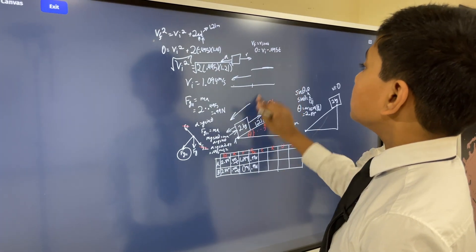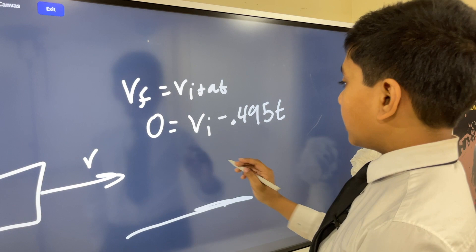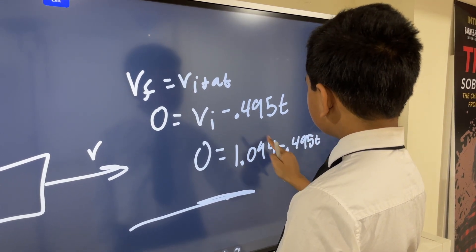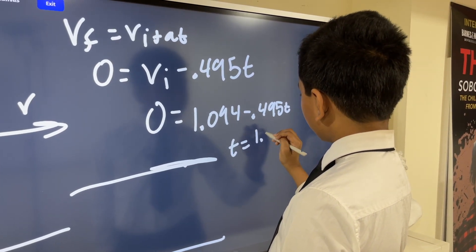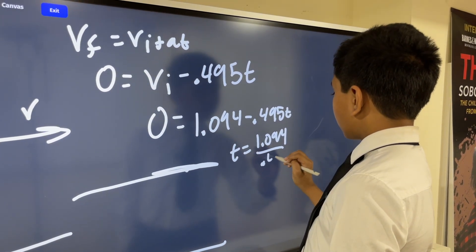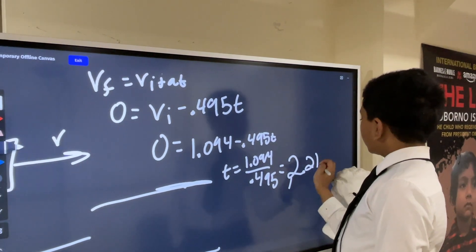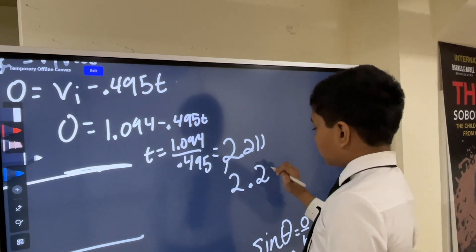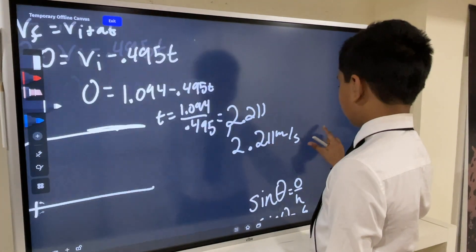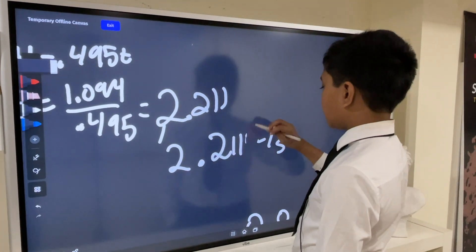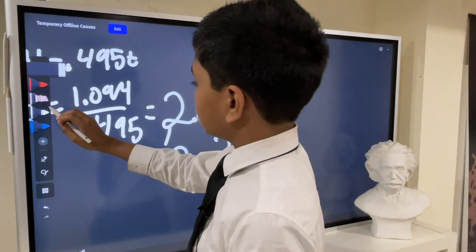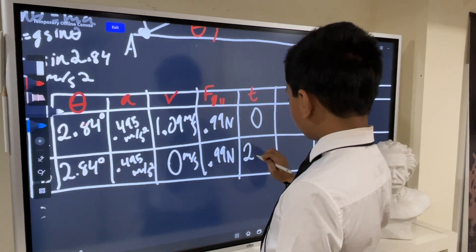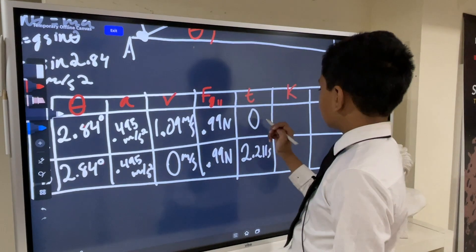What about time? Well, now we already know VI. VI is 1.094 minus 0.495t. So T is simply 1.094 over 0.495, which equals 2.211. Sorry, that was a little curved because Einstein is over here. 2.211, not meters per second, that's not the unit of time. It's just 2.211 seconds. So time is 0 at A, and 2.211 seconds at B.